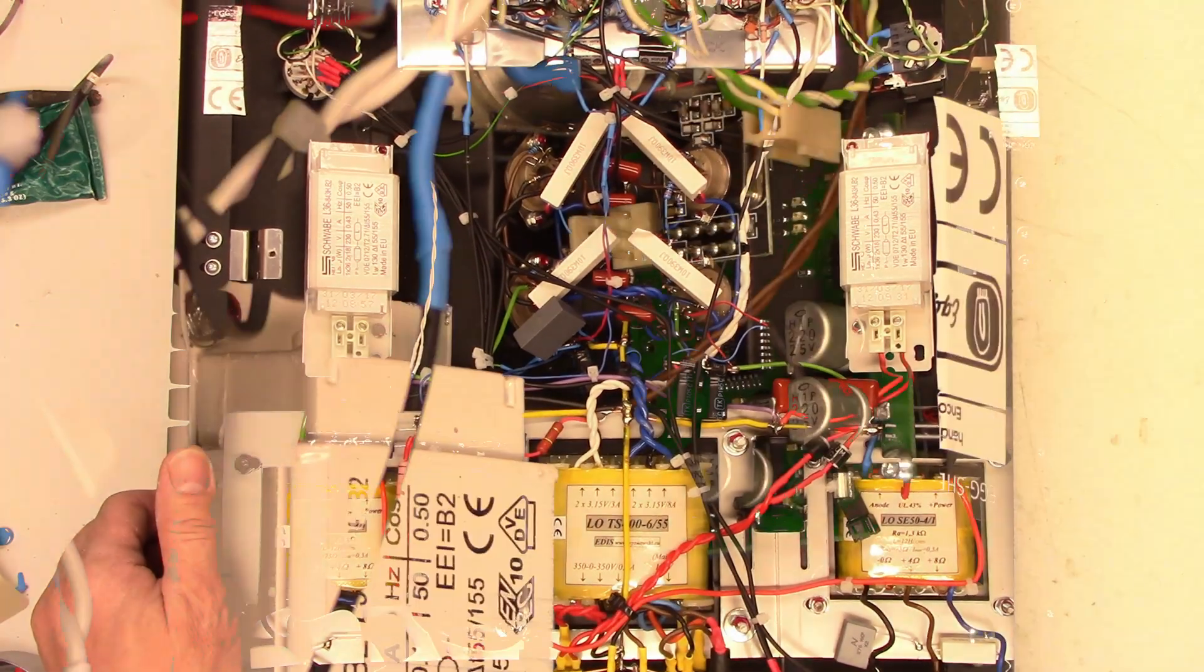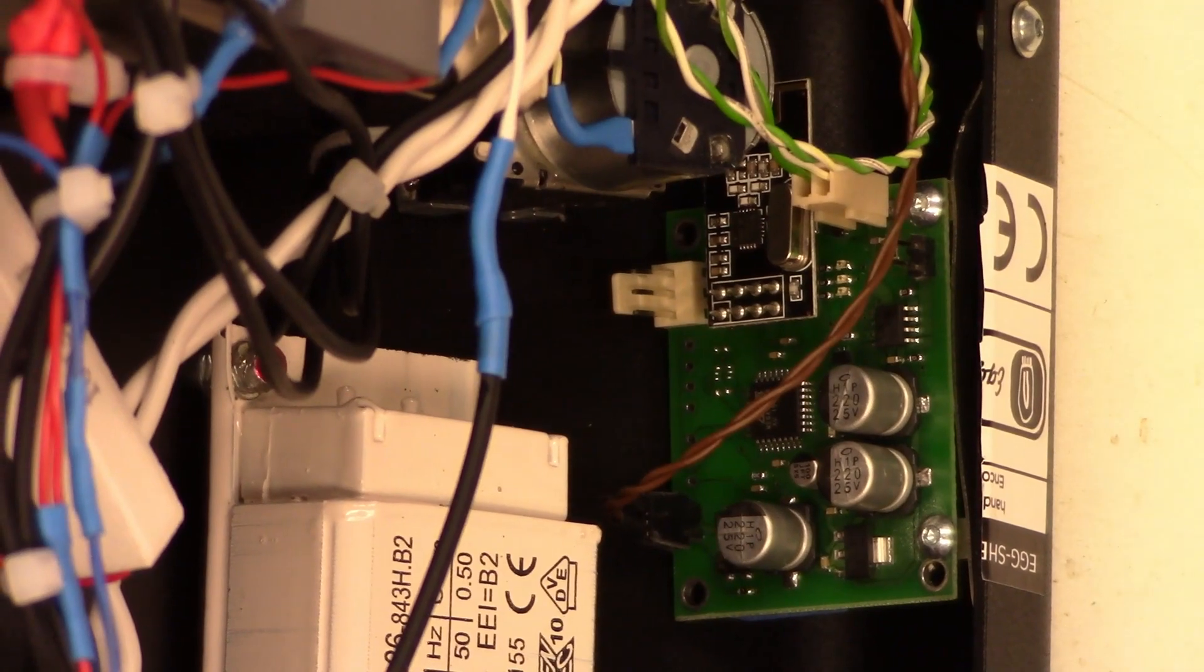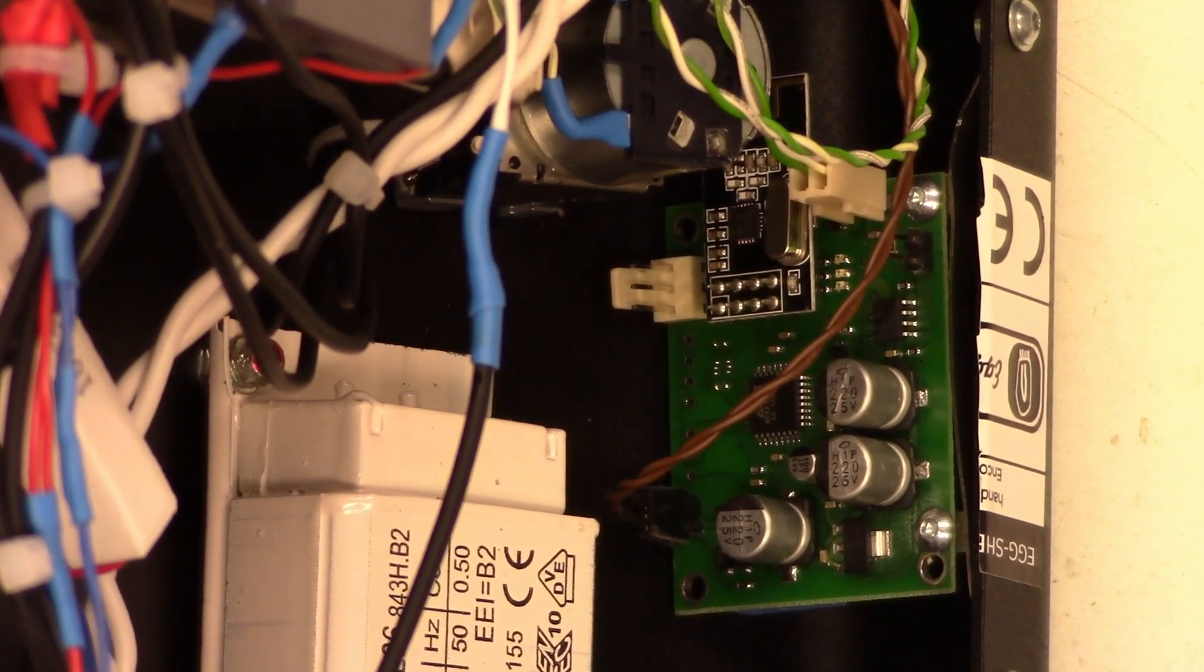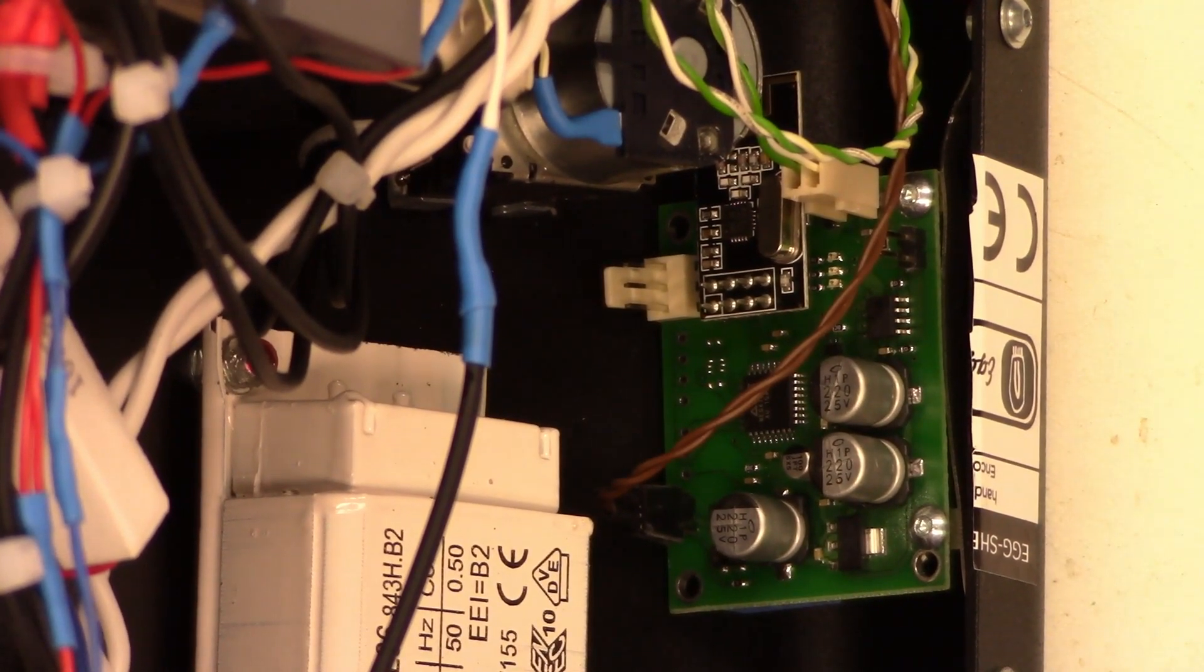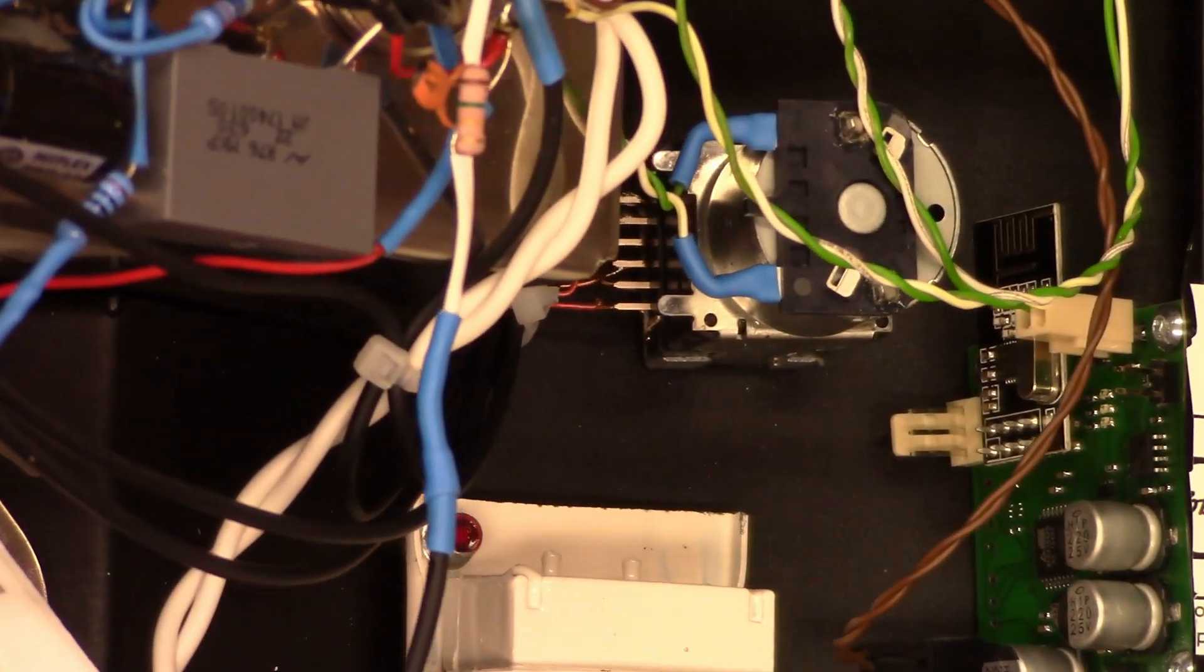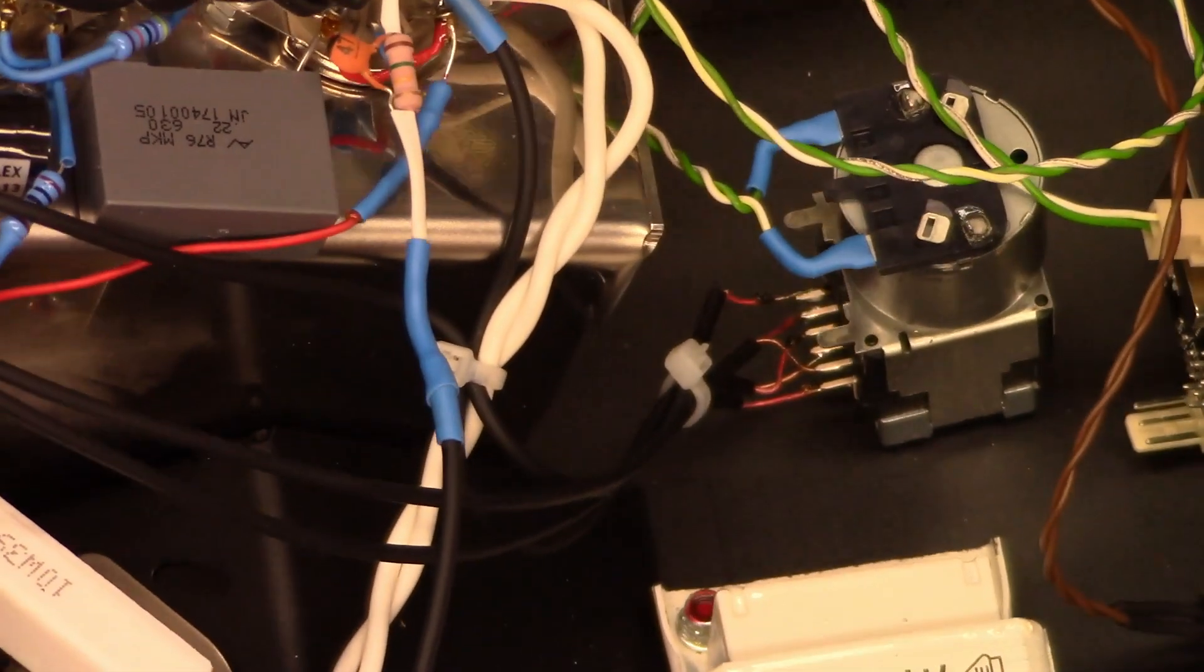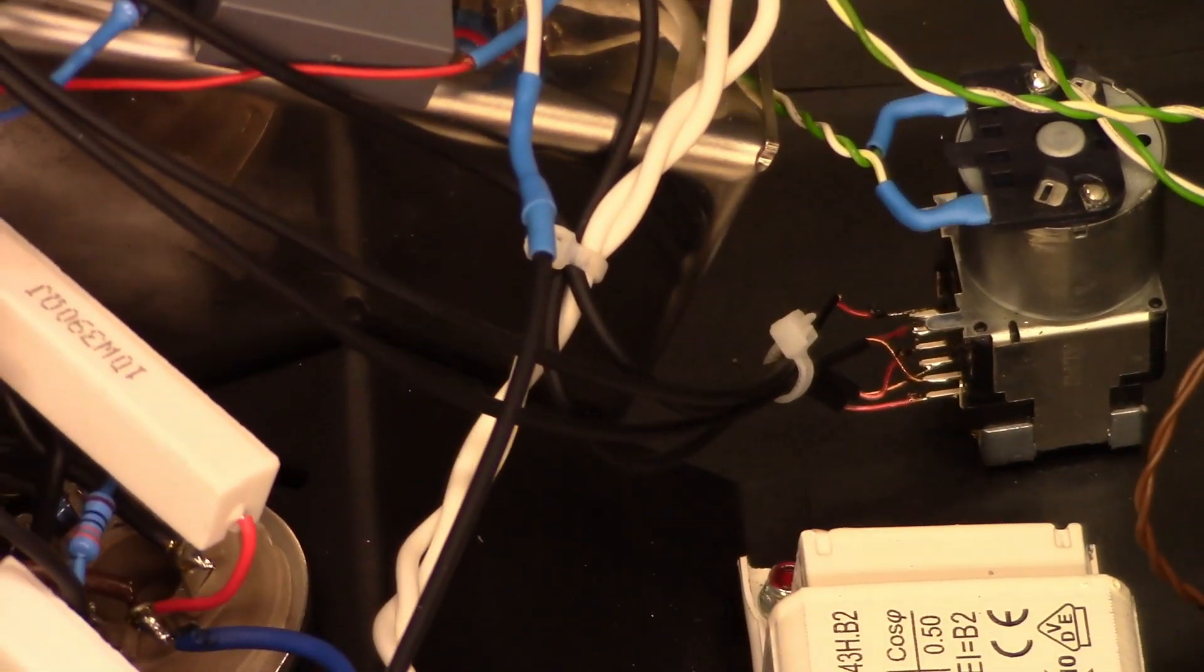There it is. There's the wide open view. So I didn't even notice this on the first go around, but look at this module over here. I believe this is going to be a Bluetooth receiver module. And look at that. It's set up. There's the volume control right there.